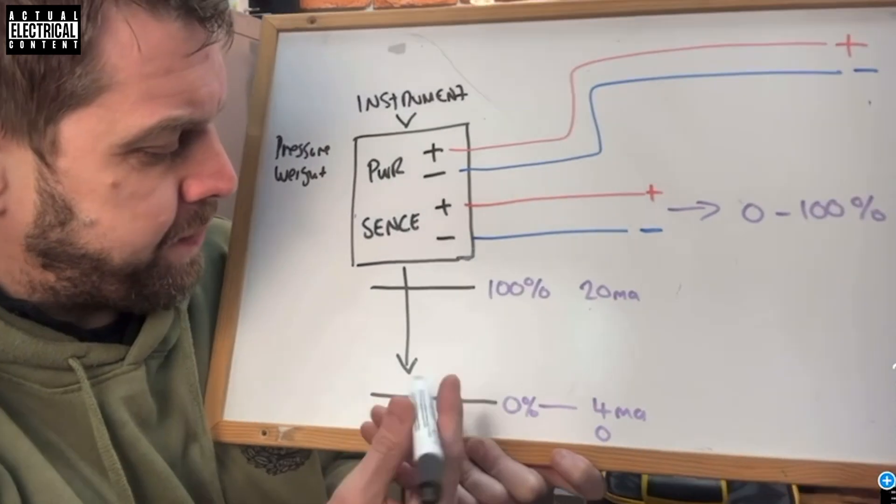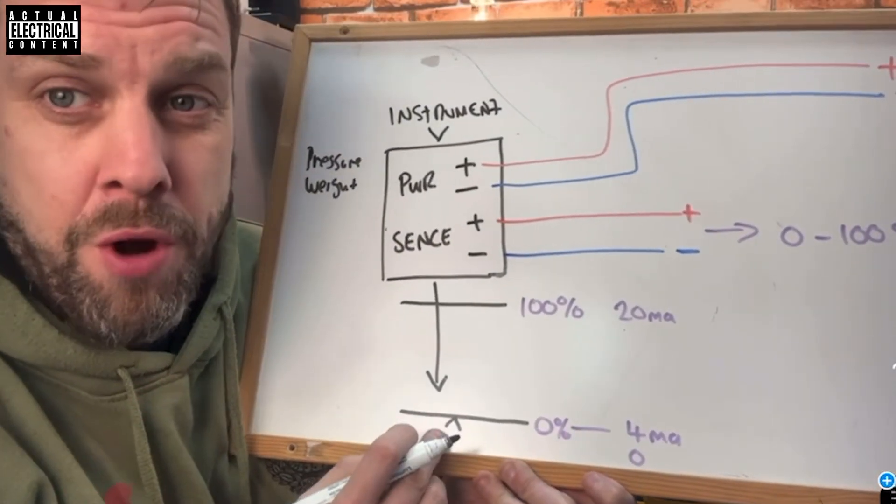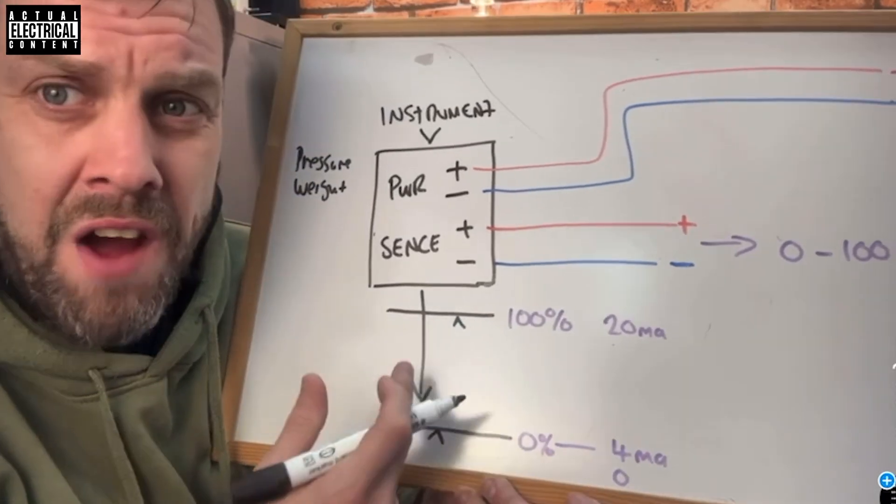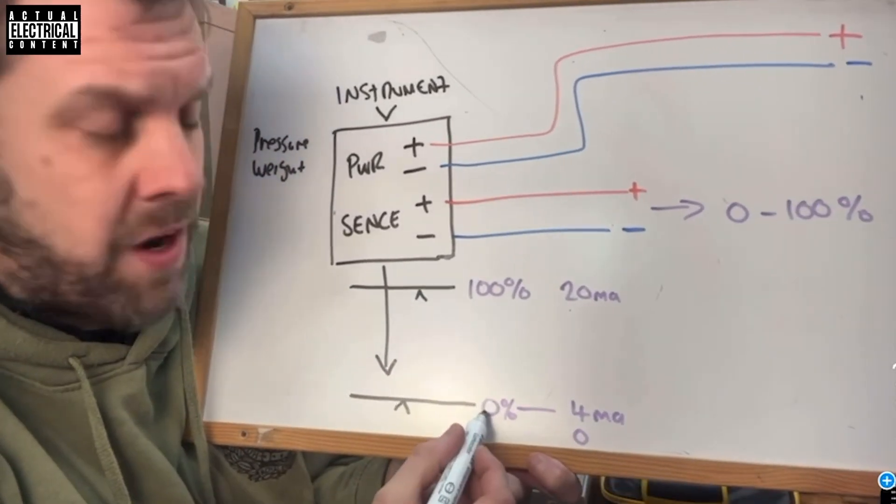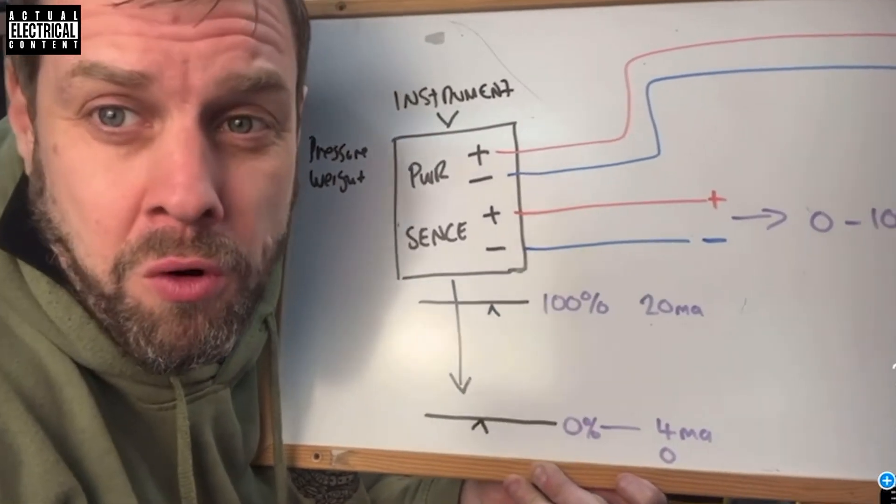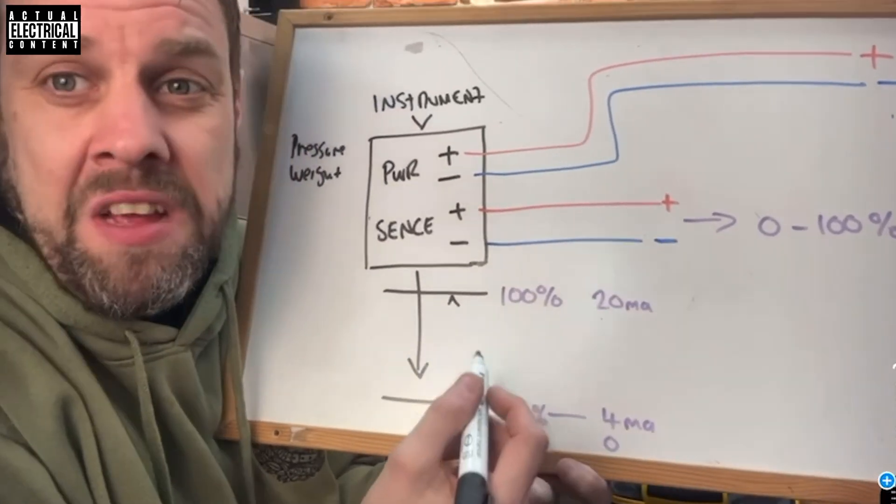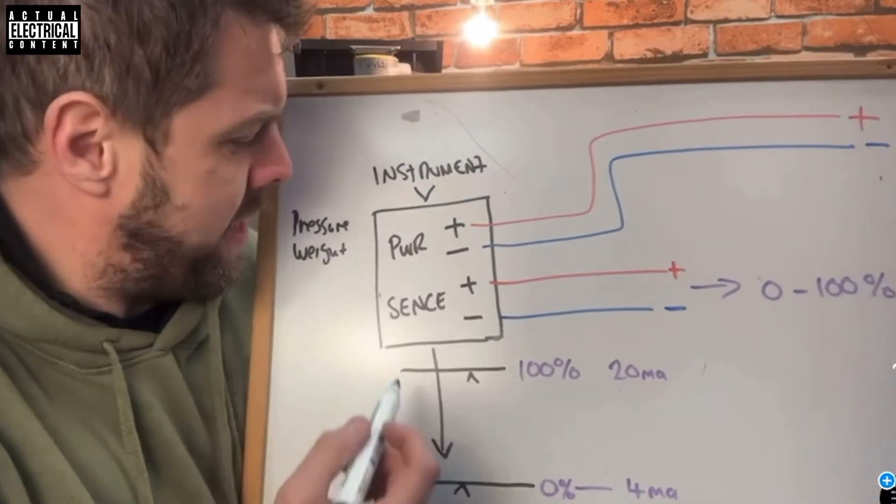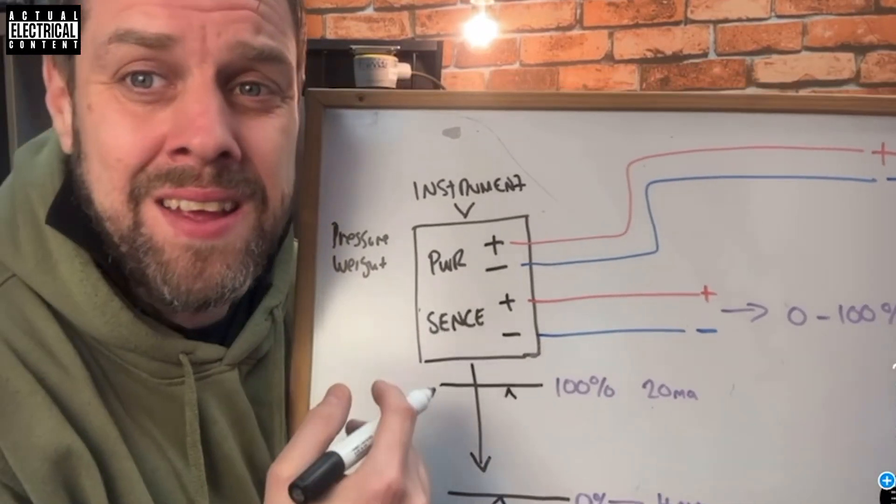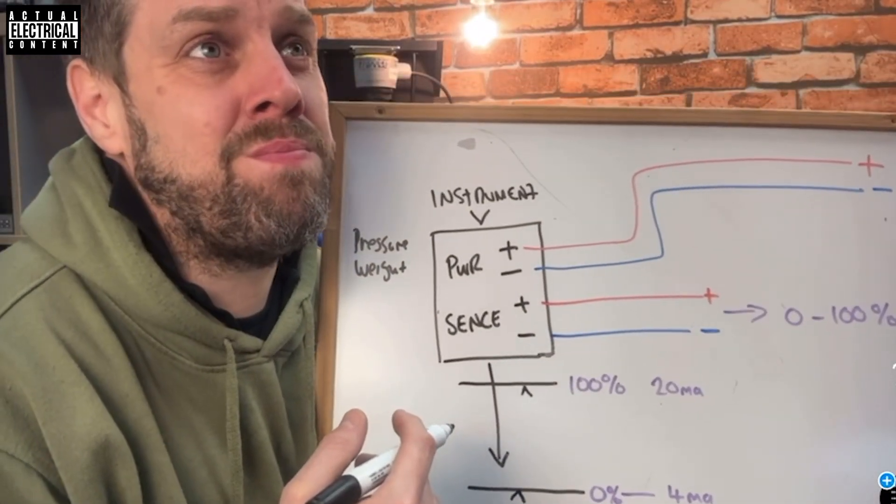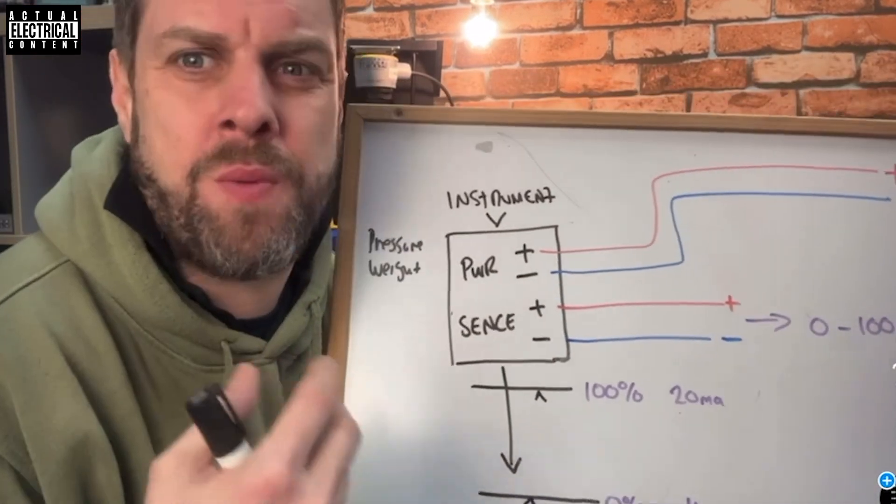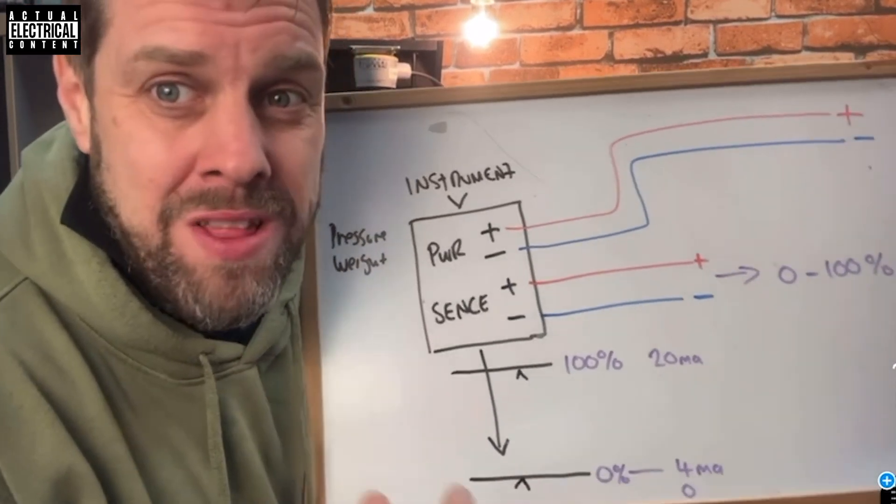Then you apply a percentage to that, so zero to one ton becomes zero to 100 percent, which in the world of milliamps becomes 4 to 20 milliamps.